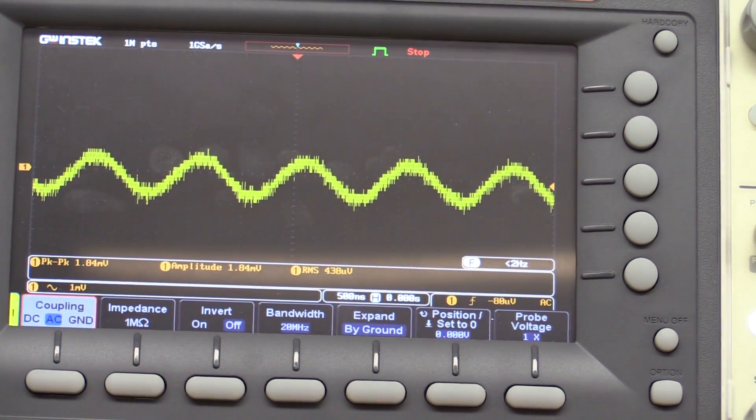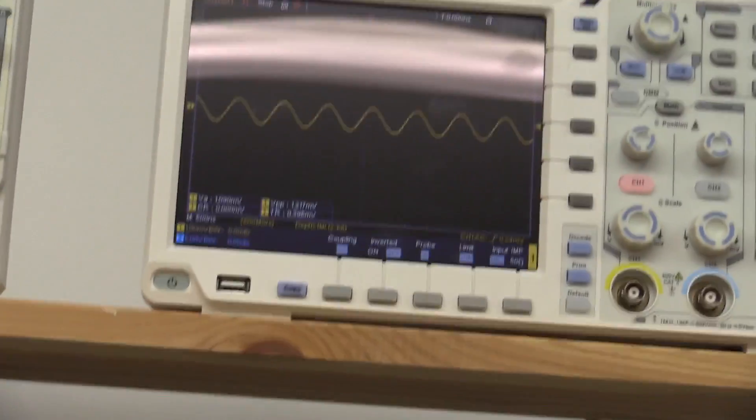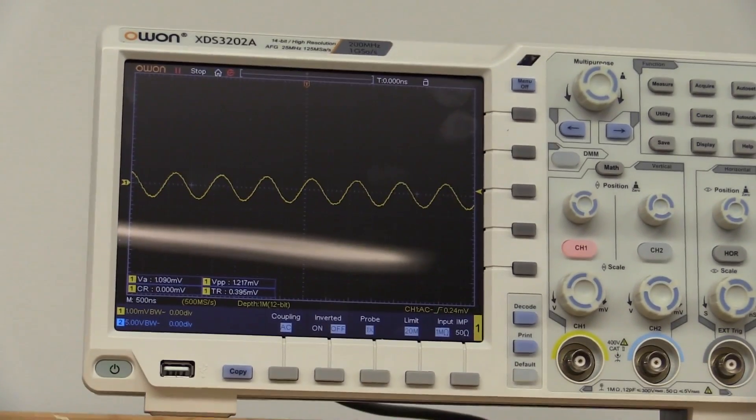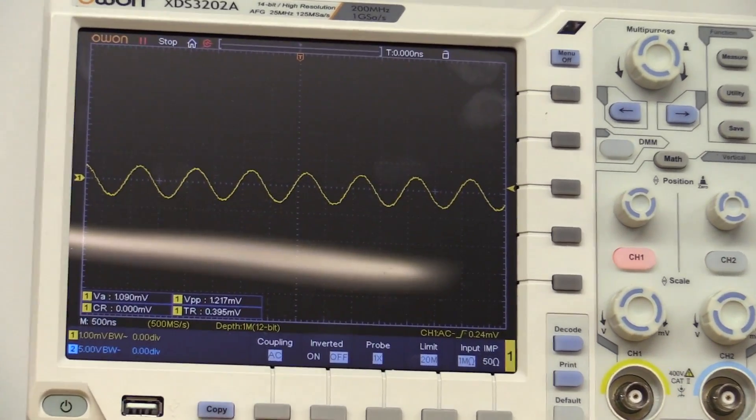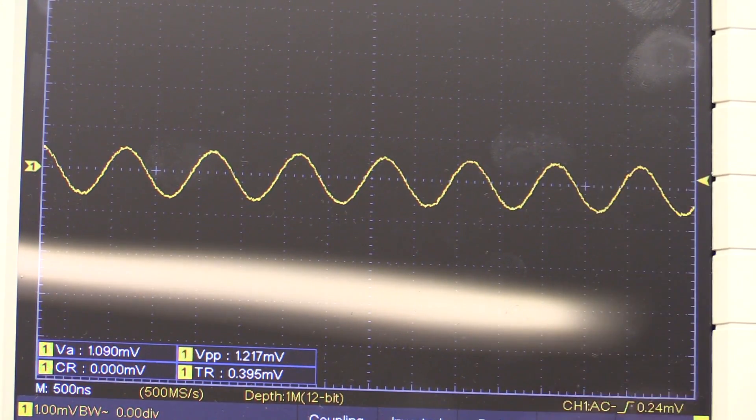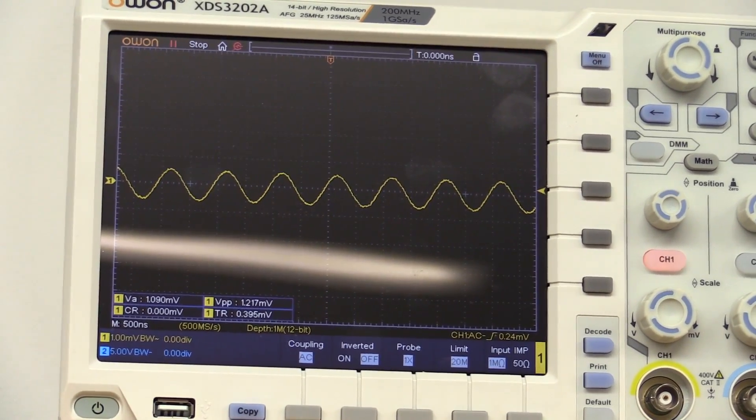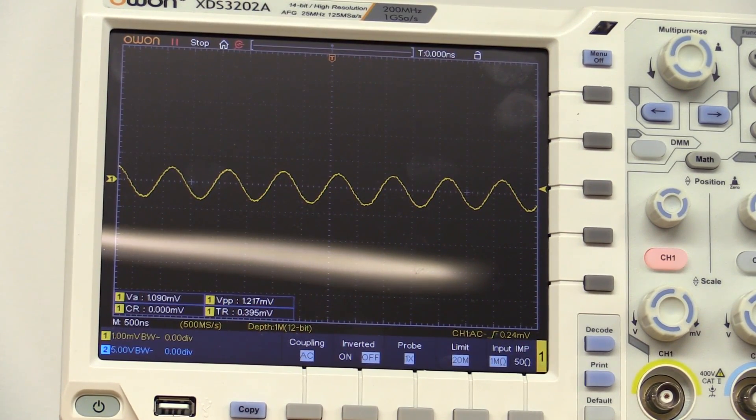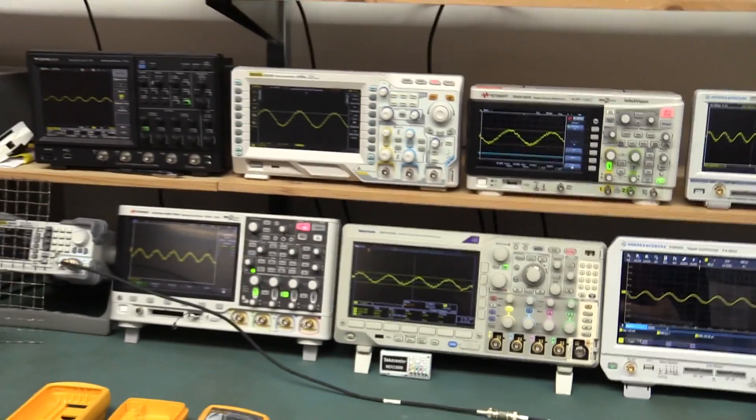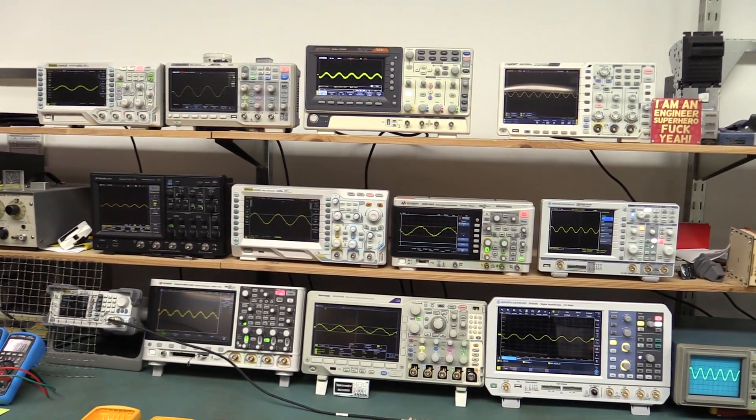The GW Instec is the worst of the bunch. Look at that. That's just horrid. The Owon has a 14-bit converter but it's actually only 12 bits at the moment. The 8-bit doesn't show the detail but it's still pretty clean. That's actually an excellent result on the Owon. So there you go, that's a quick comparison of all these different scopes. I'll leave that setup and do some more tests in the future.